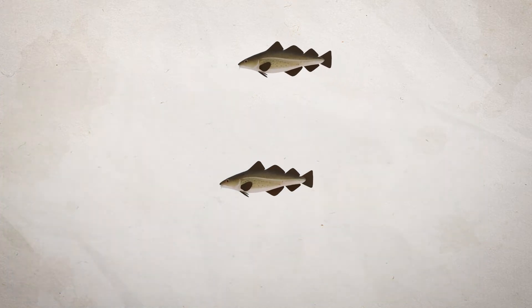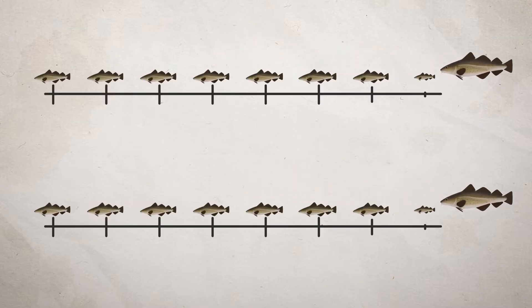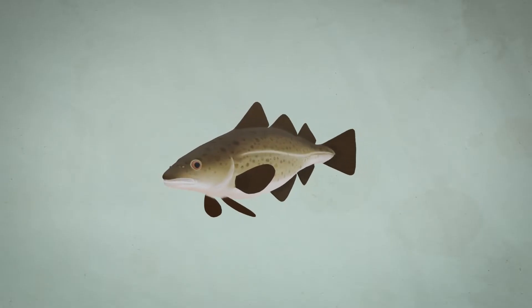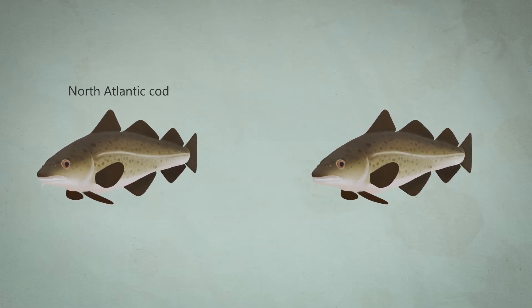These adaptations and others in different populations of cod have occurred over generations, and it is important to understand that they do not apply at the individual level. We normally divide cod into two groups, North Atlantic cod and coastal cod.